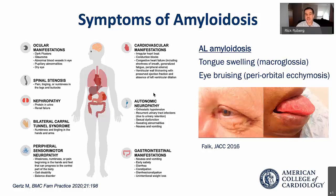AL amyloidosis can cause many of these things as well, particularly neuropathy with proteinuria from amyloid deposition in the kidney. Pathognomonically, AL amyloidosis is recognized by macroglossia or periorbital ecchymosis, where bruising and petechiae are seen around the eyes related to small vessel amyloid infiltration and leakage. These findings are seen in AL amyloidosis and not in ATTR amyloidosis, which is why specific testing is necessary to evaluate both types when cardiac amyloidosis is suspected.